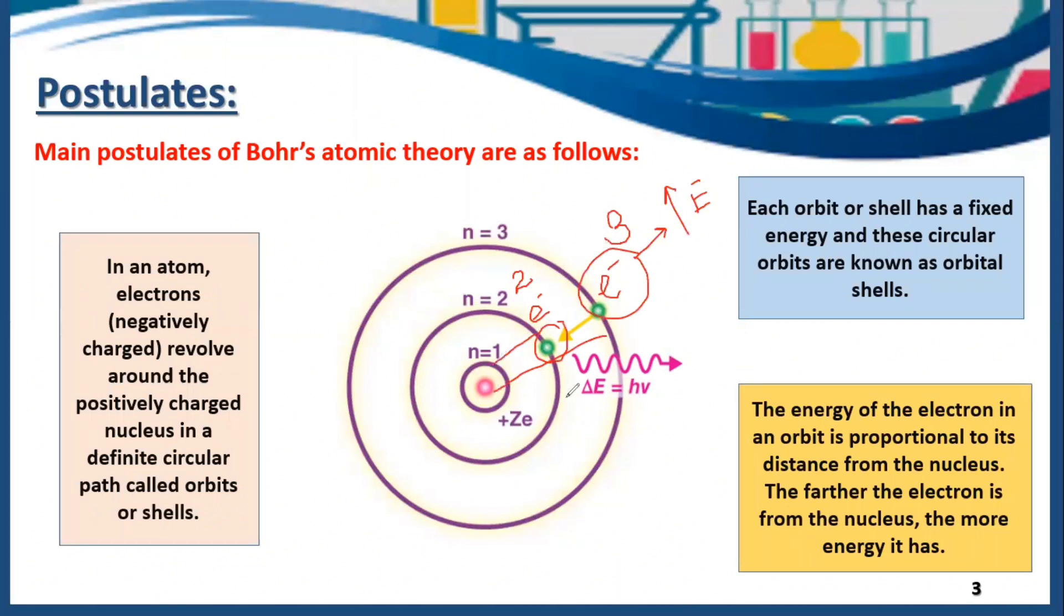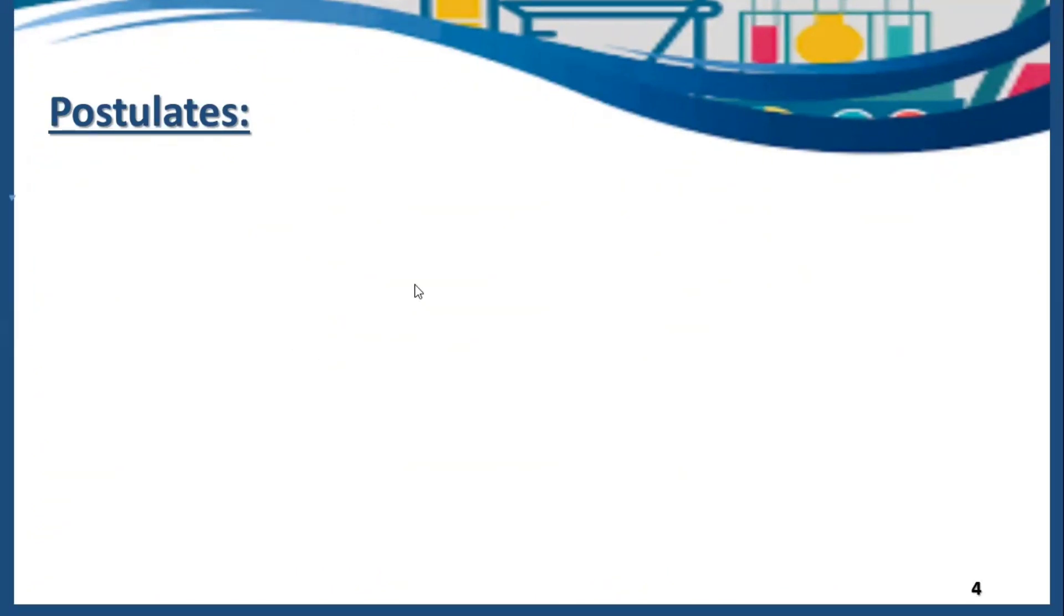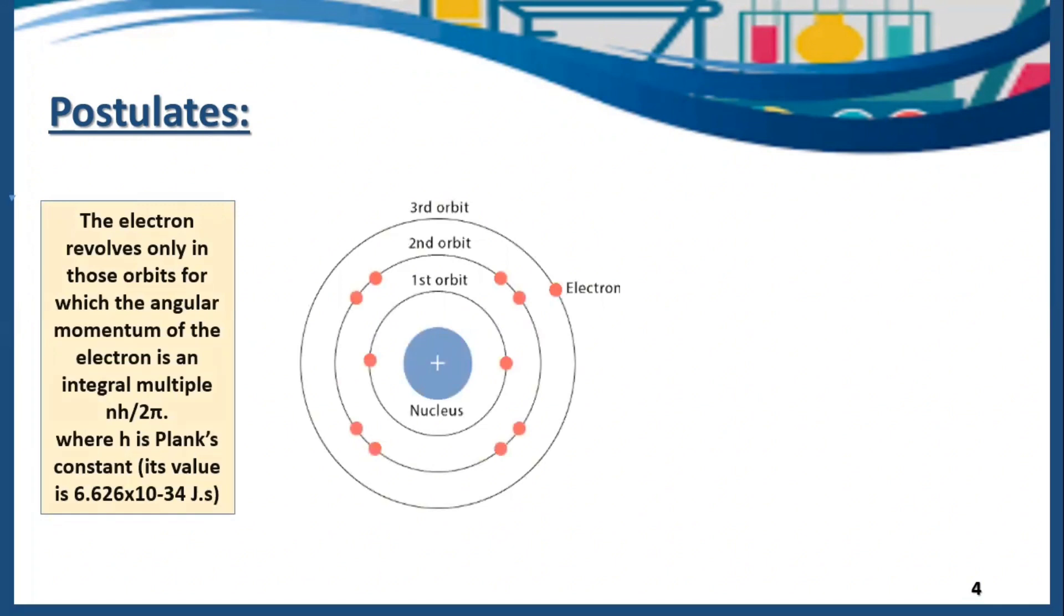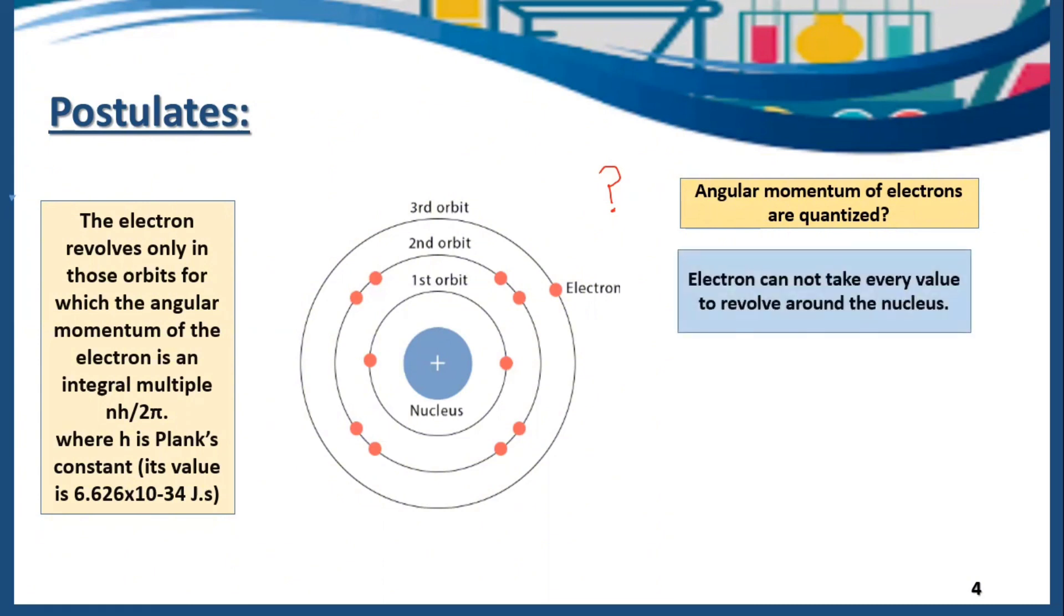Then comes the next postulate: the electron revolves only in those orbits for which the angular momentum of the electron is an integral multiple of h divided by 2π. h is a Planck's constant and its value is 6.626 × 10^-34 joule second, which is fixed. Angular momentum of the electron are quantized. It means electron cannot take every value to revolve around the nucleus. Electron will revolve only in those orbits who have angular momentum of 1h/2π, 2h/2π, 3h/2π and so on. Angular momentum is integral multiple of natural numbers.